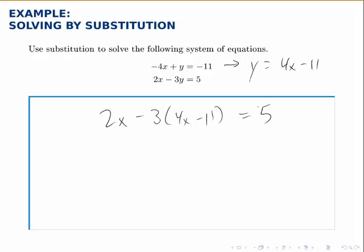And now this is a single equation with a single unknown, just x. So I can solve this. Distributing the 3 through these parentheses, we get 2x minus 12x plus 33 equals 5, and then combining like terms, negative 10x plus 33 equals 5.